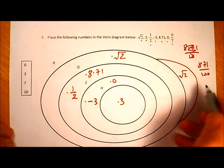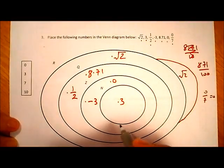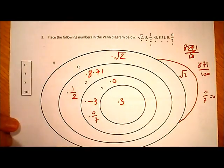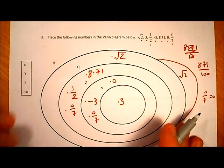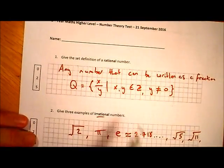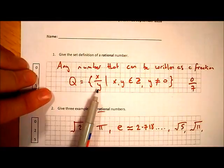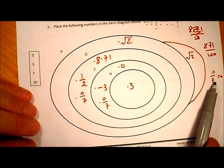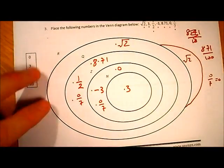For 0 over 7: that equals 0, so it is an integer. You could place it in the integer section, or in the rational section — both are acceptable. Going back to the definition, 0 over 7 is X over Y where X and Y are both integers, and the denominator is not zero, so it is indeed a rational number.